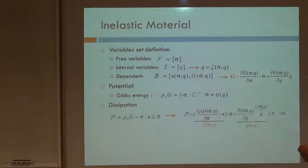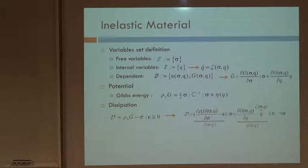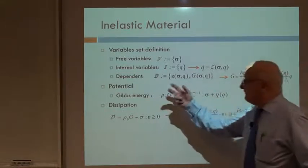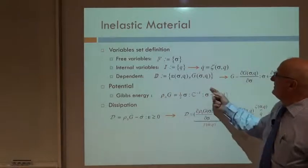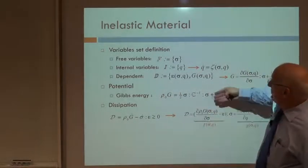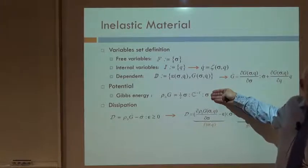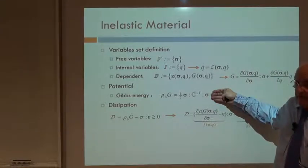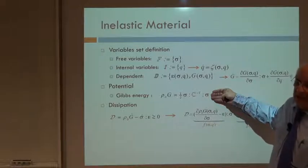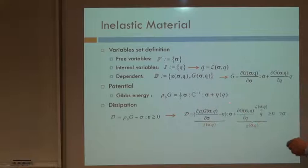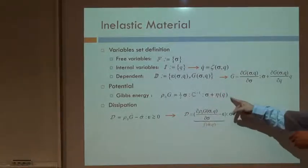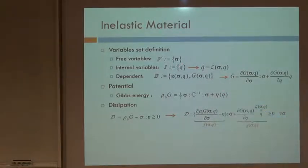That means that when I need to differentiate G with respect to time, I have to differentiate G with respect to sigma times sigma dot, plus G with respect to Q times Q dot. Now, we define the Gibbs energy as the sum of two terms: one which is the one that would appear if the material was elastic, plus some additional potential in the Gibbs energy which depends only on the internal variable. That's the typical form of the Gibbs energy in inelastic materials.